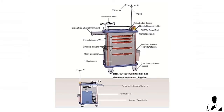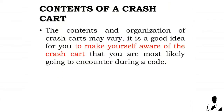The physical parts of a crash cart include: an intravenous pole with hooks, a sharps container and needle disposal holder, dust baskets, a defibrillator shelf, a sliding side shelf, drawers, a CPR board or backboard, and an oxygen tank holder. The contents and organization of crash carts may vary, so it is a good idea to make yourself aware of the crash cart you are most likely to encounter during a code.